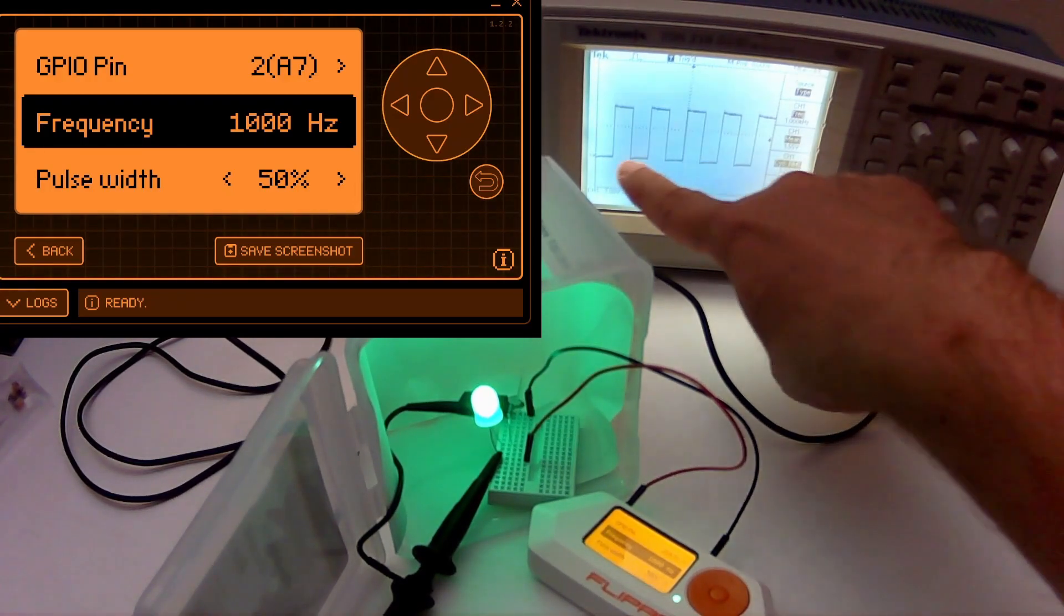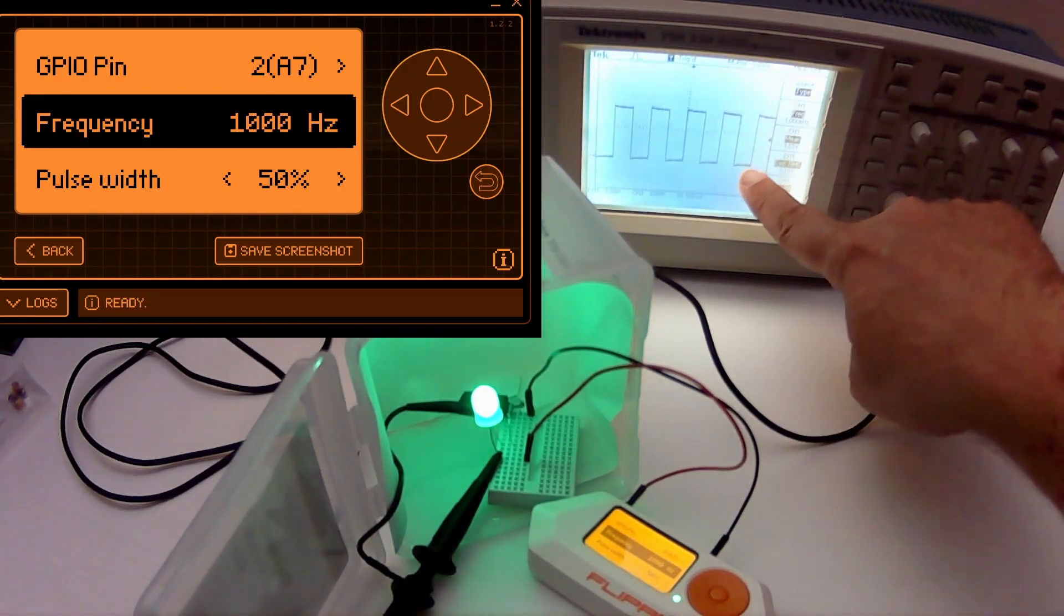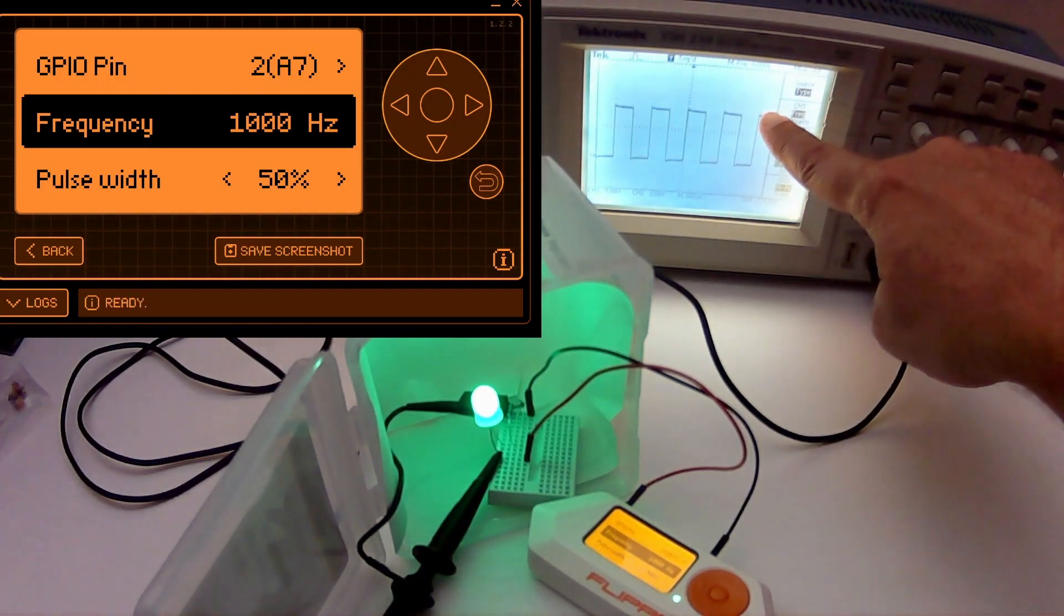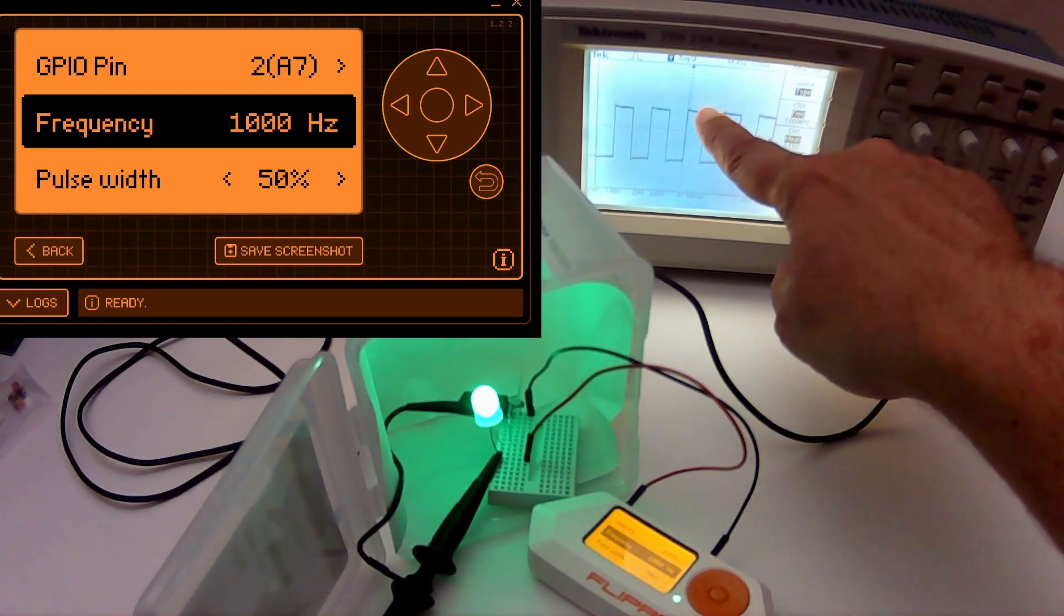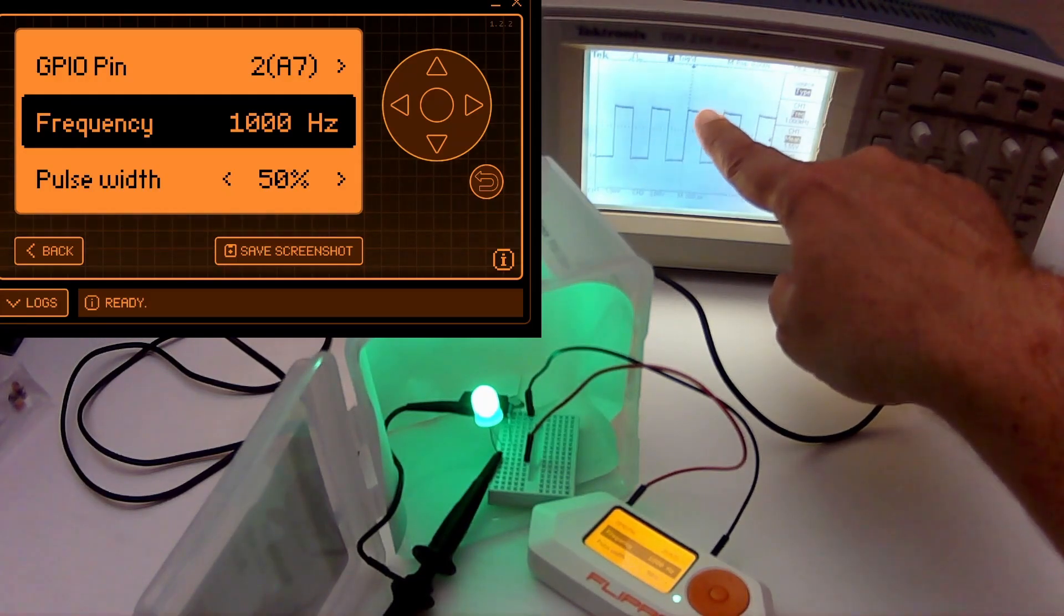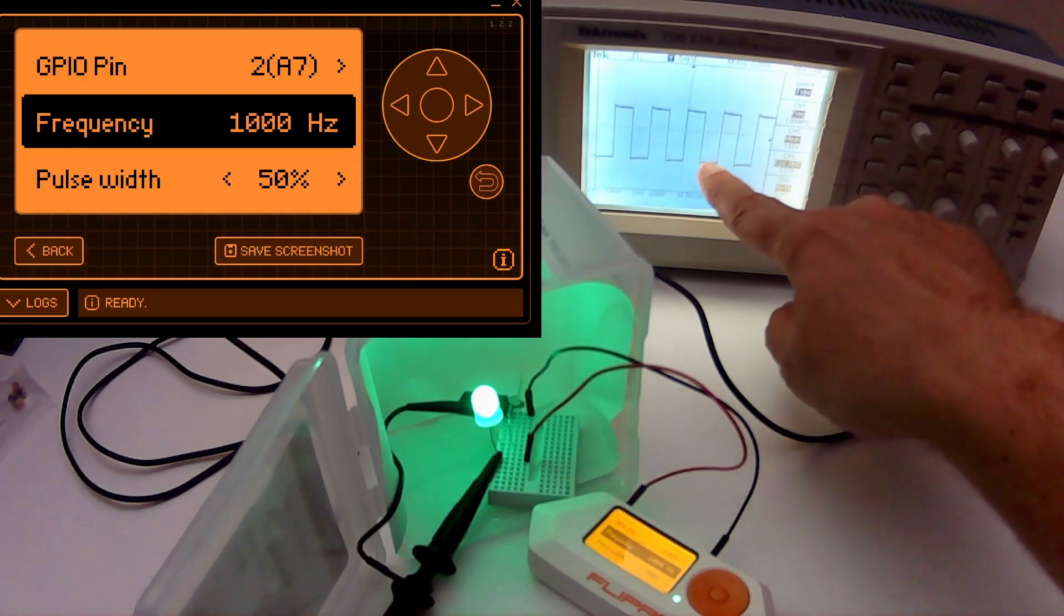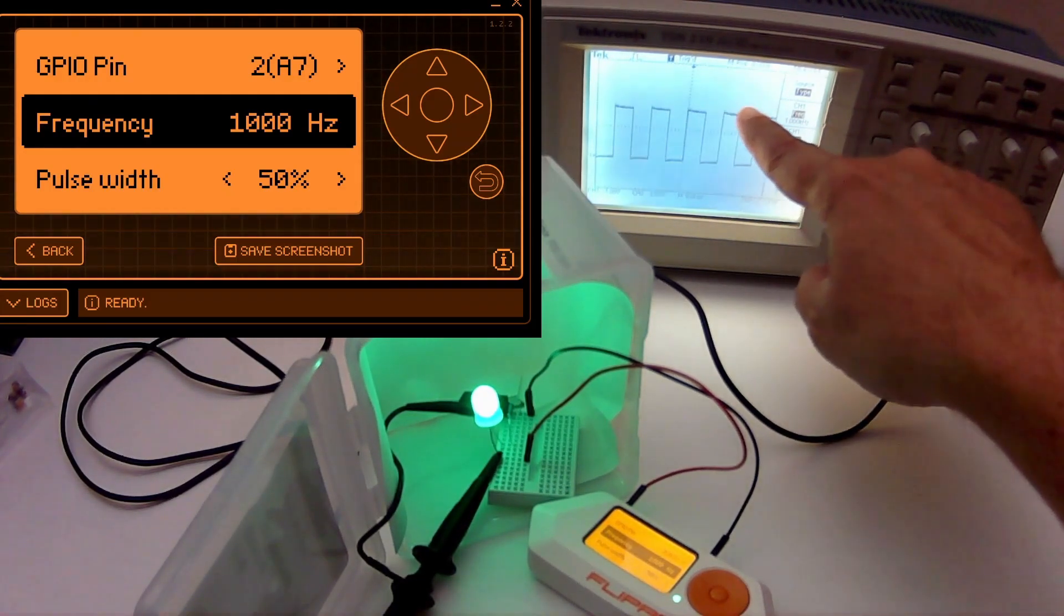On the oscilloscope, this bottom line is our ground. The top line is 3.3 volts. We can see it jumps up to 3.3 volts for about half of the cycle and then it drops back down to ground for the other half of the cycle. We have a 50% duty cycle.